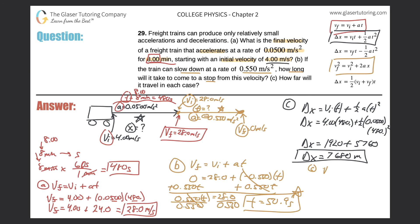Let's write down equation four: the final velocity squared equals the initial velocity squared plus two times the acceleration multiplied by the displacement. The final velocity in the gold frame is zero — so zero squared. The initial velocity is 28.0.